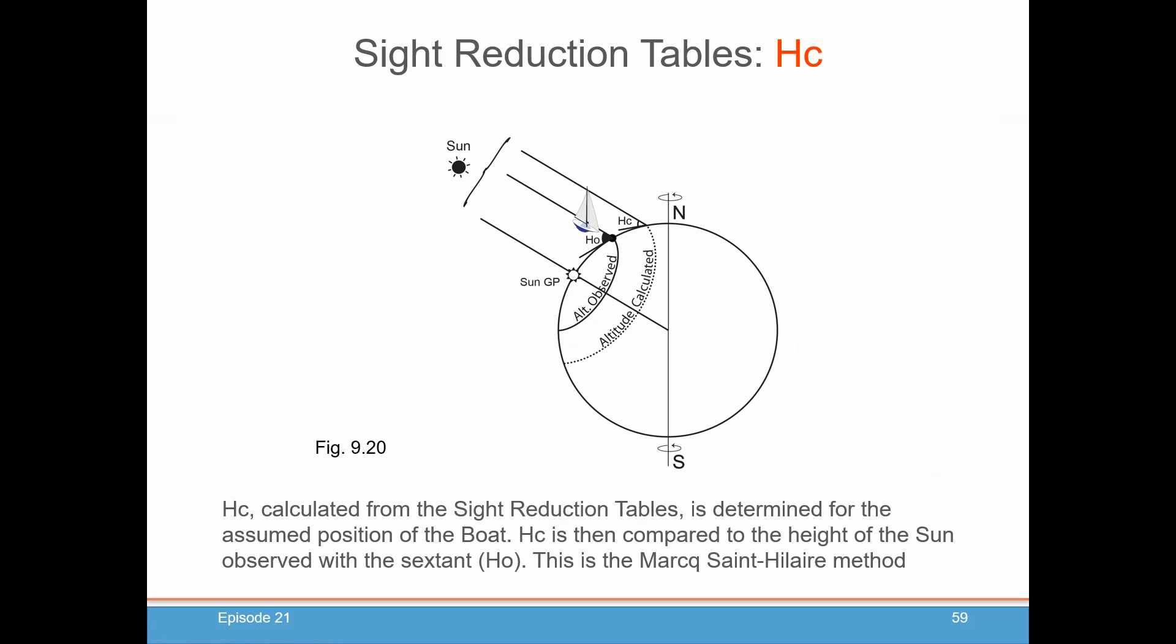Just remember what we're doing here. We're in our boat. We observe the angle of the Sun, call it HO. But the tables are going to give us HC. And the difference between the two will tell us how far away we are from the assumed position, where the calculated altitude came from. This particular technique for locating yourself on the Earth using a difference between HO and HC is called the Mark-Saint-Hilaire method.